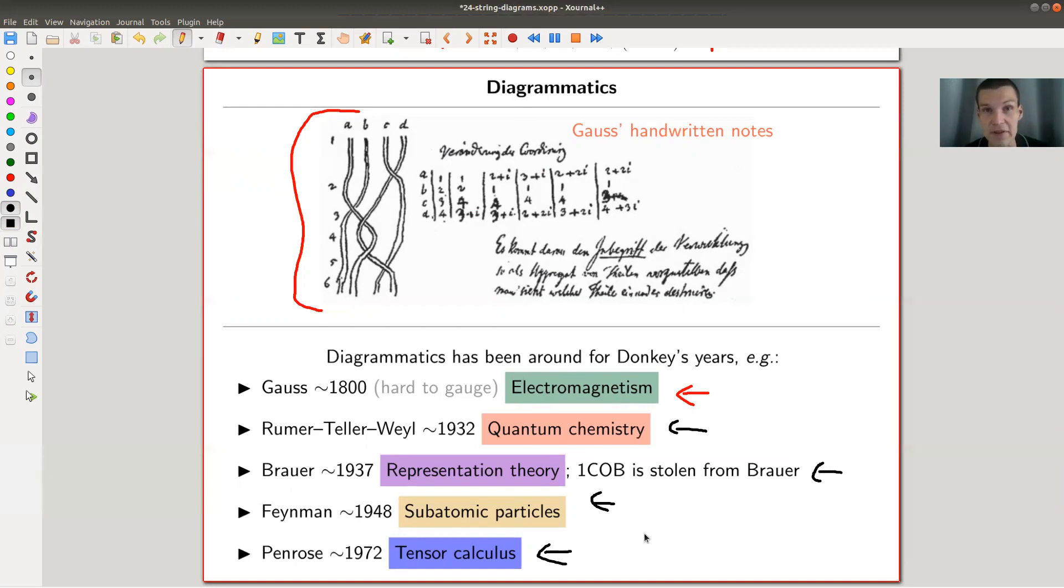Probably the most famous one is the one you want to date it back to, Penrose's tensor calculus, which is by now still quite old. It's from 1972.